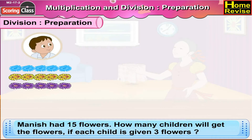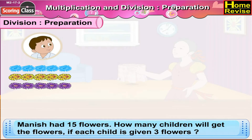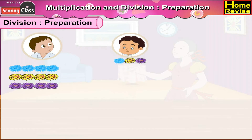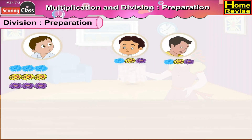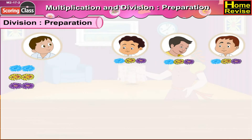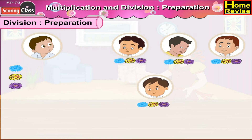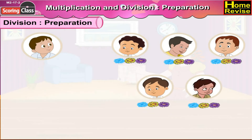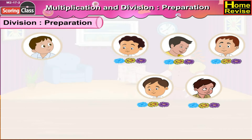Manish has fifteen flowers. How many children will get the flowers if each child is given three flowers? He gives three flowers out of these to the first child, three flowers to the second child, three flowers to the third child, again three flowers to the fourth child, three flowers to the fifth child. Now, the flowers are finished. Manish has distributed all his fifteen flowers.